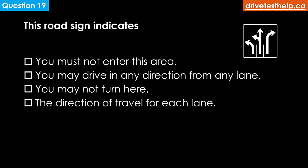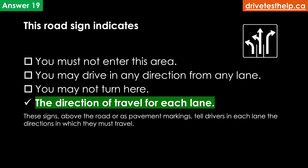This road sign indicates the direction of travel for each lane. These signs above the road or as pavement markings tell drivers in each lane the directions in which they must travel. This particular sign means that drivers in the left lane must turn left, drivers in the center lane must either turn right or go straight, and drivers in the right lane must turn right.